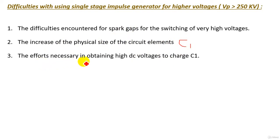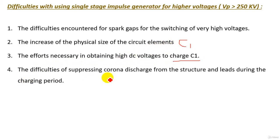Also, the efforts necessary in obtaining higher DC voltage to charge C1. This point is a result of the previous point. Also, difficulties of suppressing corona discharge from the structure and leads during the charging periods.